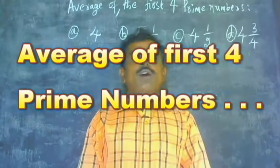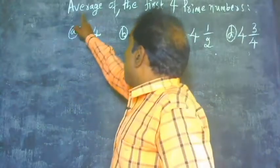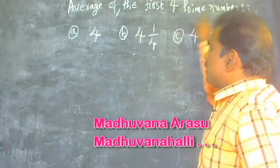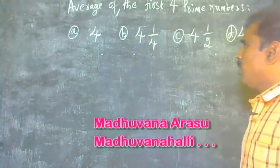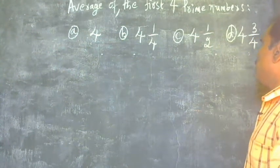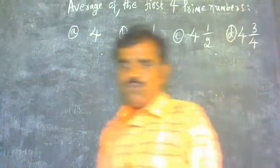Let us solve the problem. Average of the first 4 prime numbers: option A is 4, option B is 4 and 1/4, option C is 4 and 1/2, option D is 4 and 3/4.